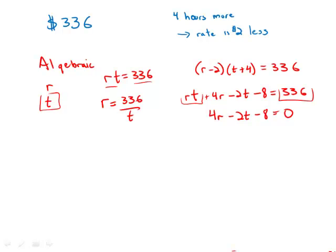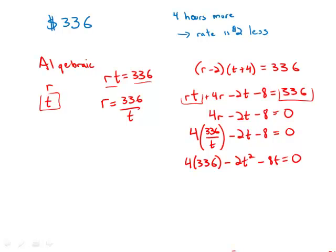This will give me 4 times the expression for r, which is 336 over t, minus 2t minus 8 equals 0. And now, so I don't have a fraction, I'm going to multiply everything by t. So I get 4 times 336 minus 2t squared minus 8t equals 0.